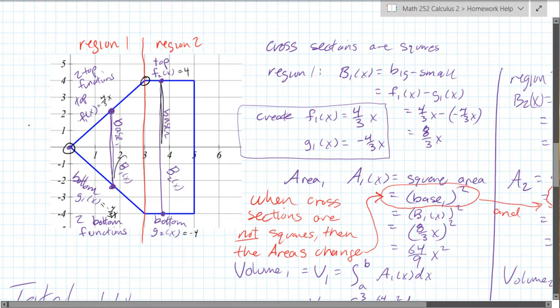And we're starting with the base, so I label this function b1 of x, it's the base function in region one. And it's gonna always, all these are big minus small, and what's the big function is g1, the small function, big function is f1.